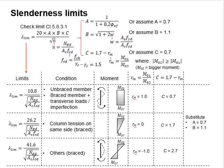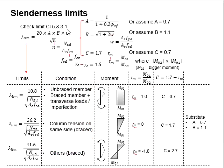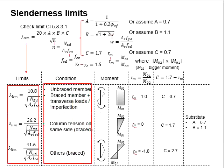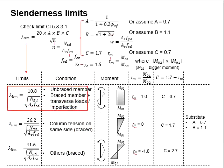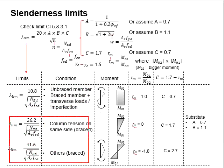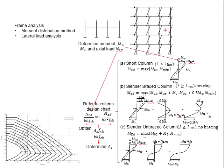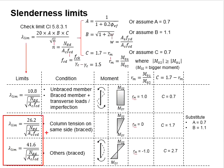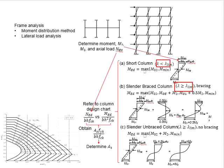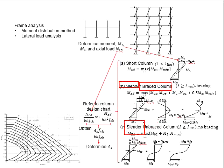For more conservative calculations, you may assume c equals 0.7, 1.17, or 2.7, depending on the conditions outlined. These will be the slenderness limits in accordance with each condition. One set is meant for unbraced conditions while the others are for braced conditions. Depending on the column bending configuration, you may choose the relevant slenderness limit. From the checking of the slenderness limit, you will determine whether it is a short column or a slender column. If slender, you need to consider whether the building structure is braced or unbraced.